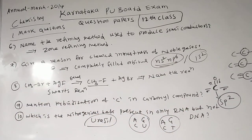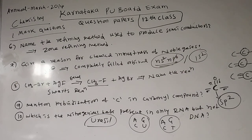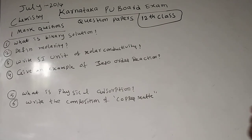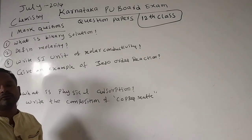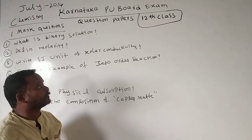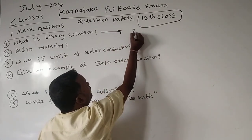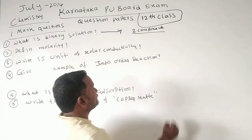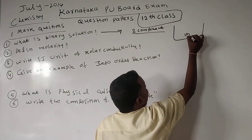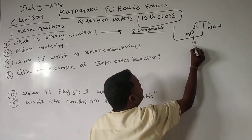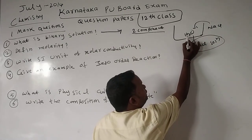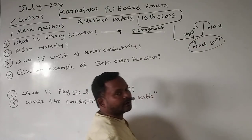This was the first question paper from 2014 annual. Now, next in continuation we will see July 2014 question paper. One more question: what is a binary solution? Binary means two. The solution which contains two components we call as a binary solution. For example, take water and add sodium chloride — we get sodium chloride solution, which contains two components: water and sodium chloride. That is why it is called a binary solution.